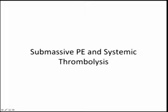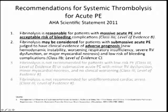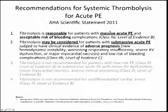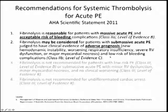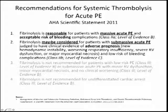Regarding submassive PE and systemic thrombolysis, AHA guidelines from 2011 don't fully reflect recent data. MOPPET came out in 2013; PEITHO and TOPCO in 2014. The guidelines state fibrinolysis is reasonable for massive PE — no one argues that — and may be considered for submassive PE. After the new RCT data, particularly MOPPET showing no increased bleeding risk, this recommendation should be upgraded to 'reasonable.'